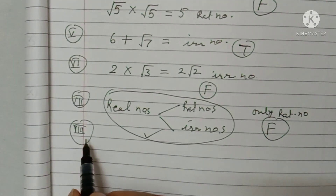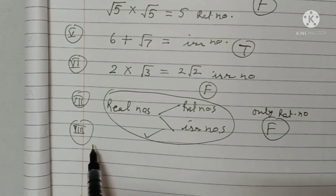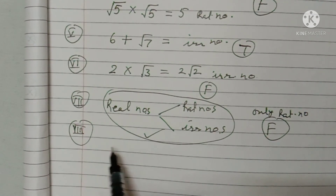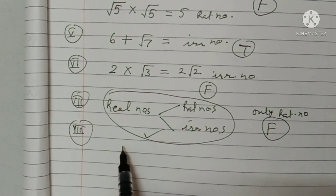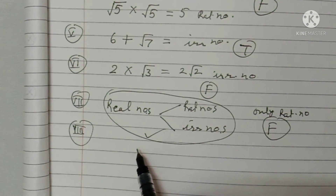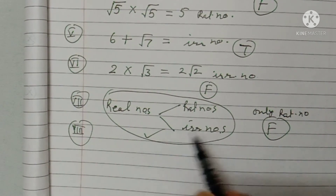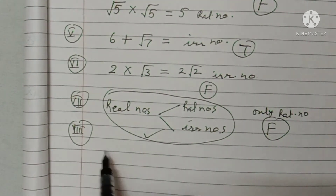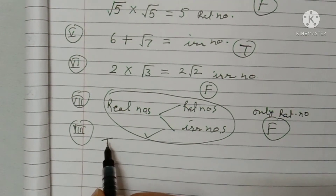Part nine: every real number is either rational or irrational. This is correct — real numbers may be rational or irrational. So this is true.